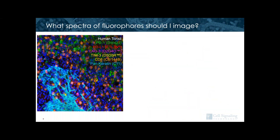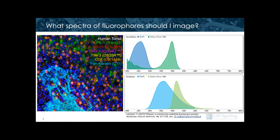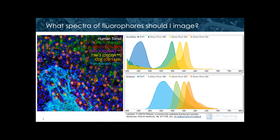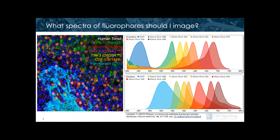Here's an example of a seven-plex image taken on a spectral imaging system. This system is equivalent to the spectra used in the Opal 7 color kit, and you can see how closely the spectra overlap. It would be incredibly difficult to image this without relying on spectral imaging to unmix these signals.